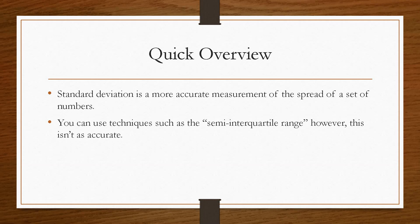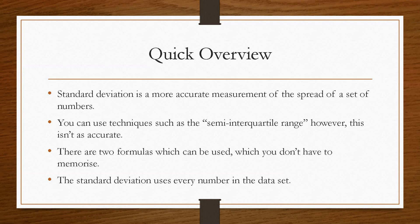You can also use techniques such as the semi-interquartile range, however these aren't as accurate as the standard deviation. There are two formulas that you can use, however you don't have to remember these as they will be given to you in the formula sheet. And the standard deviation uses every number in the data set. That is the reason why it is more accurate than the semi-interquartile range, because the semi-interquartile range only accounts for small chunks individually of the data, whereas standard deviation accounts for all the numbers at a single point in time.